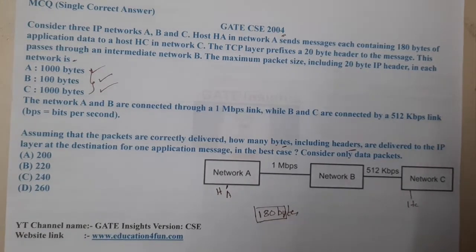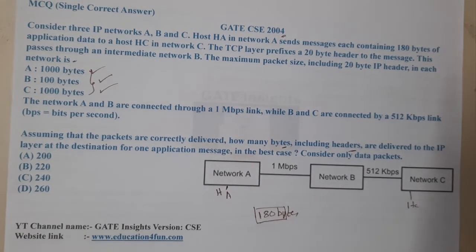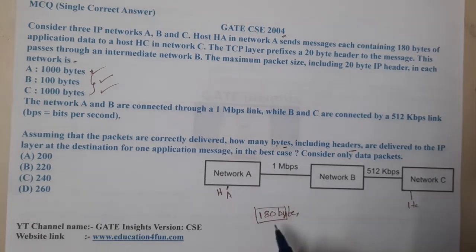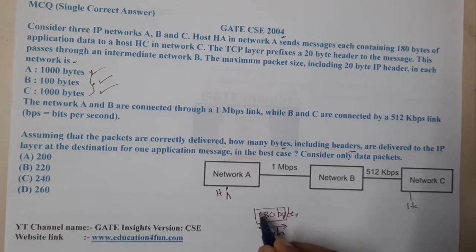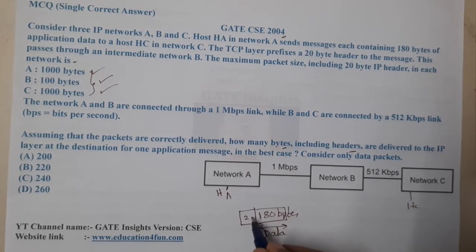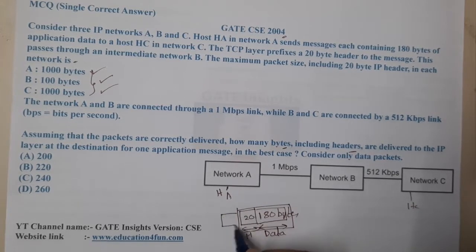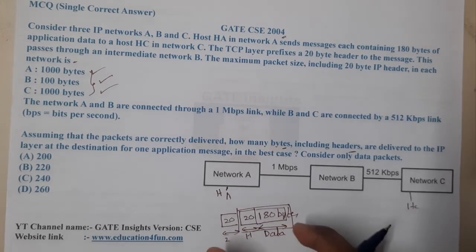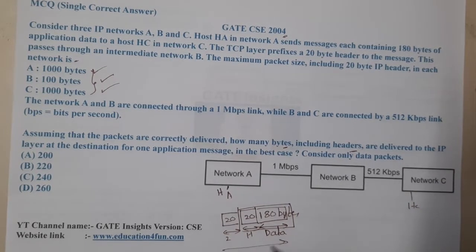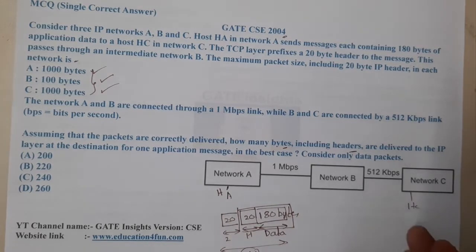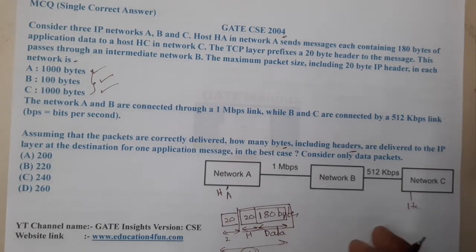They clearly stated that 180 bytes is our data. On this data, 20 bytes will be our TCP header, and then the IP layer will again add 20 bytes. So in total, the maximum size could be around 220 bytes — this is the data we want to send.